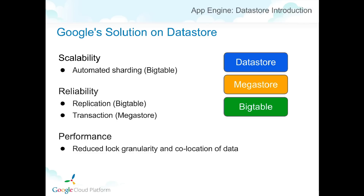This is Google's solution for the Datastore — how it secures scalability, reliability, and performance. Scalability is based on Bigtable's automated sharding. Bigtable applications are reliable, ensuring access to your data even if a server is down. Megastore supports transactions, offering strong consistency. For performance, reducing lock granularity allows co-location of data so that during a transaction, the data you need can be in one shard, drastically reducing inter-shard communication.